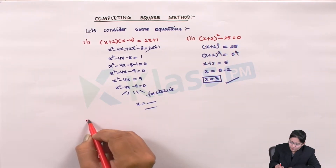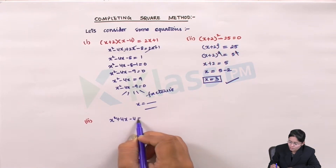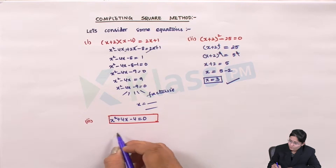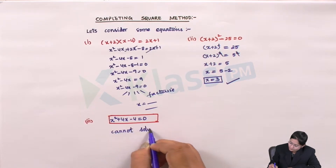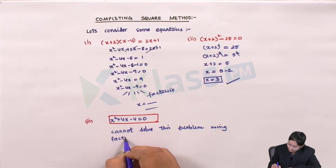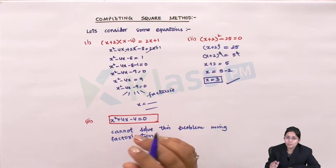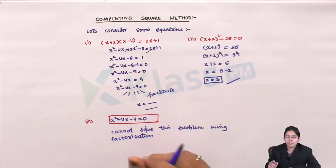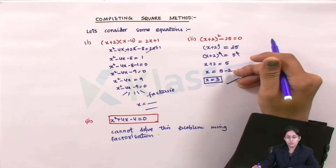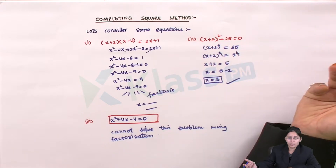Now referring to the third problem, we get something like x² + 4x − 4 = 0. If this kind of problem comes, I tell you, we cannot solve it using factorization. You can keep trying to find the roots using the factorization method but will not be able to solve it. There are certain equations which have perfect square roots, like 25 has a perfect square root of 5, but there are certain equations which may or may not have a perfect square.